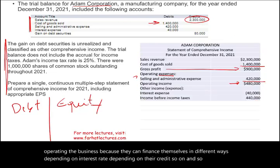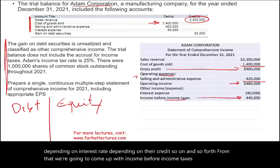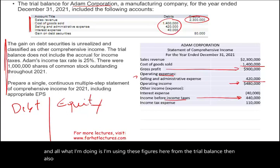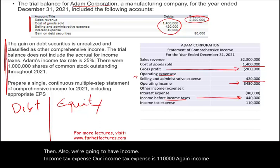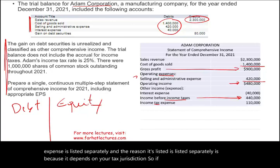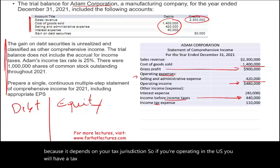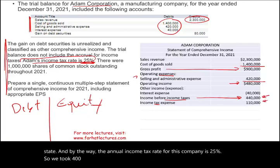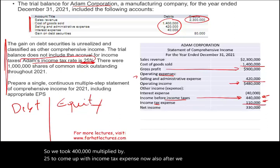From that we arrive at income before income taxes of $440,000, using figures from the trial balance. Income tax expense is listed separately because it depends on your tax jurisdiction — operating in the US, Europe, or different states results in different tax bills. The income tax rate for this company is 25%, so we take $440,000 multiplied by 25% to get income tax expense of $110,000.